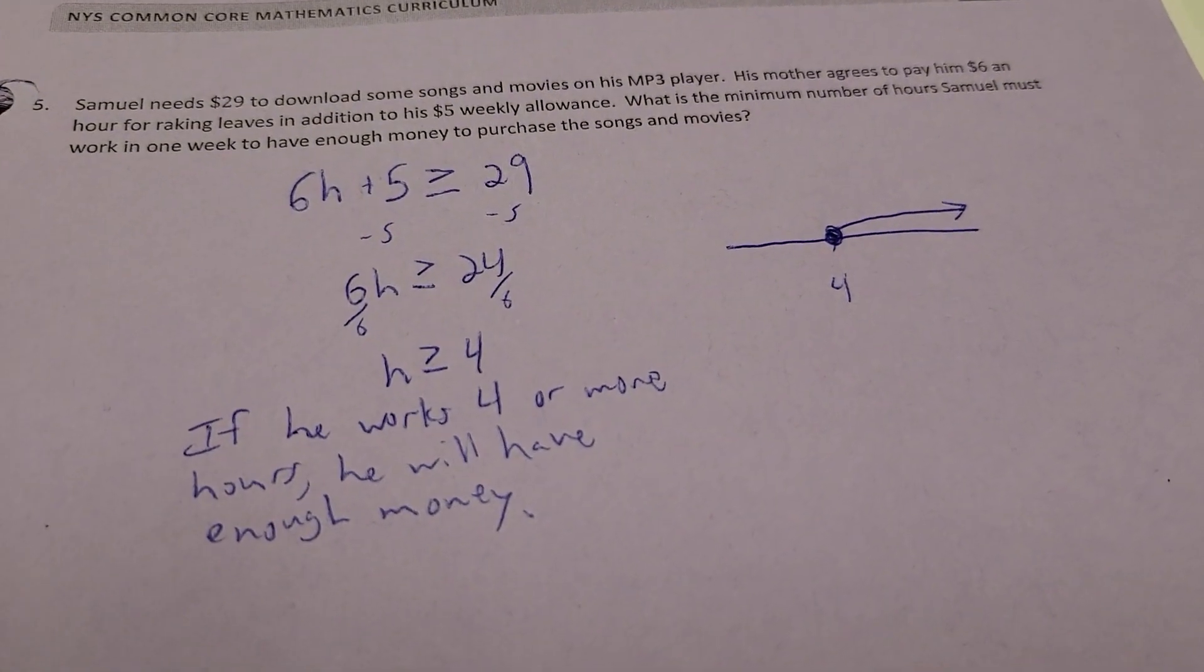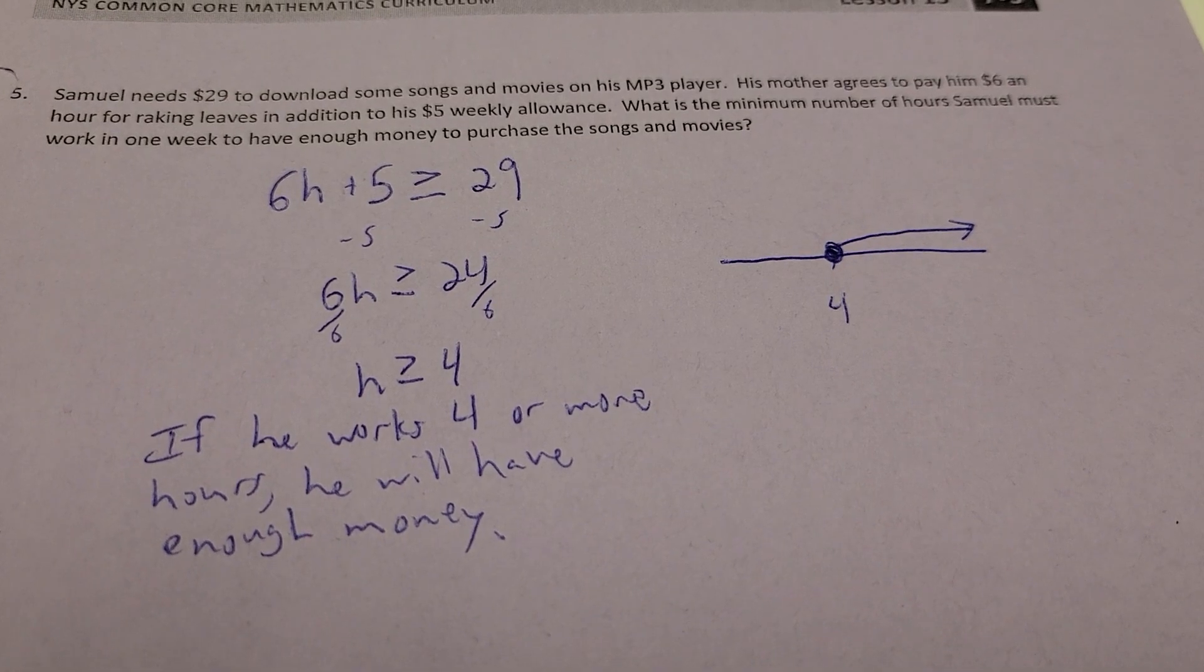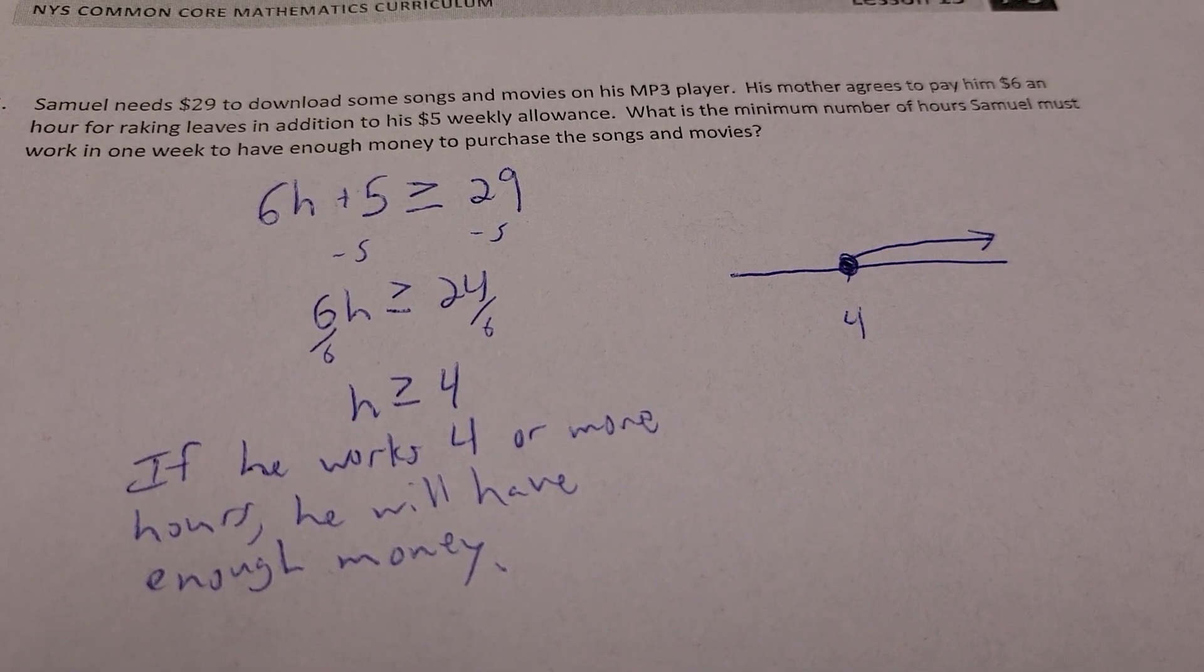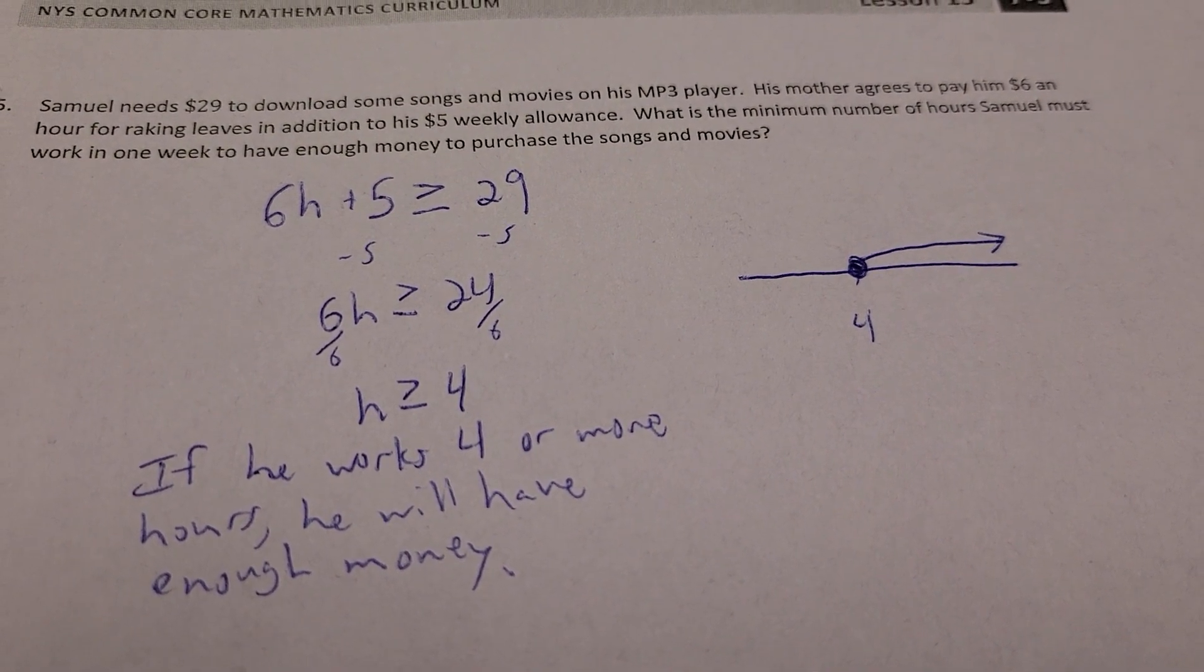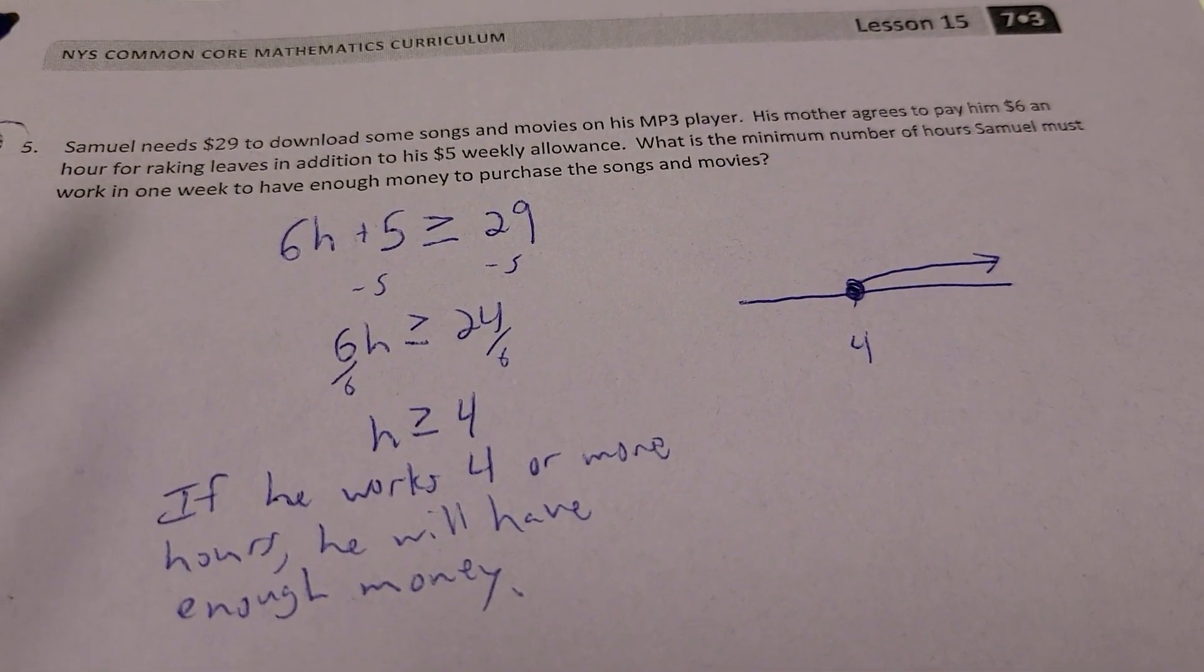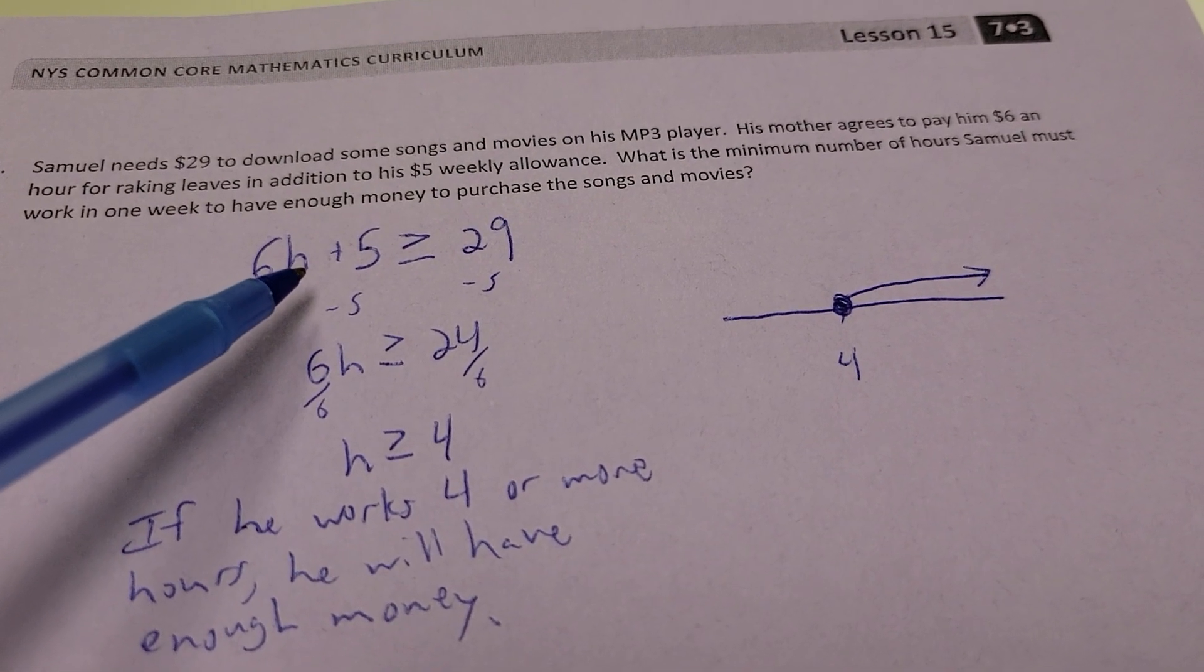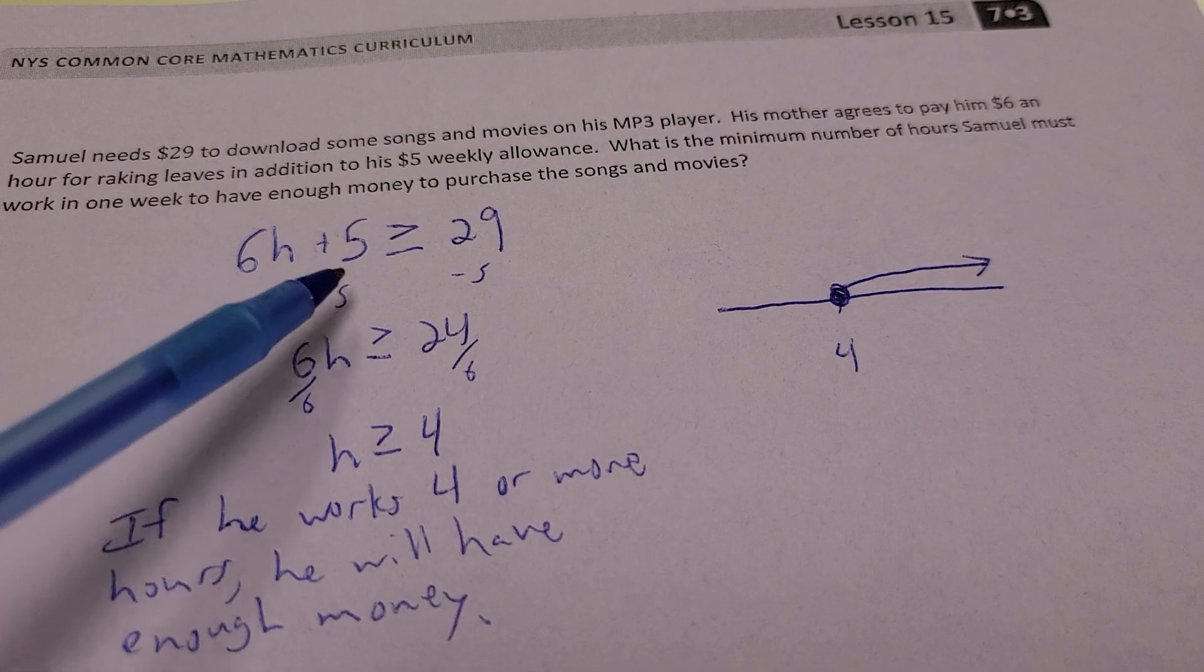Alright, one more example for you. Samuel needs $29 to download some songs, movies, on his MP3 player. His mother agrees to pay him $6 an hour for raking leaves in addition to his $5 weekly allowance. What's the minimum number of hours Samuel must work in one week to have enough money to buy the songs and movies?